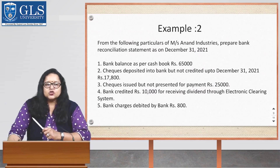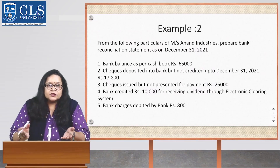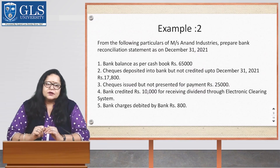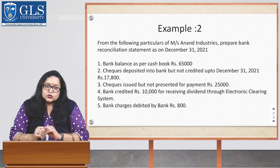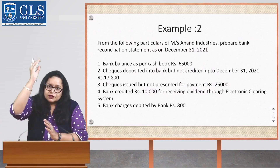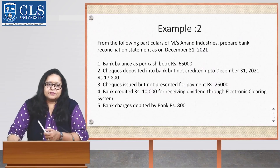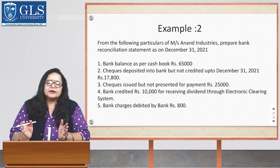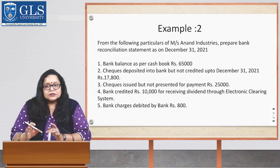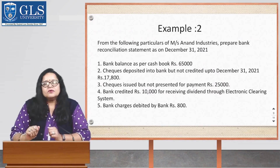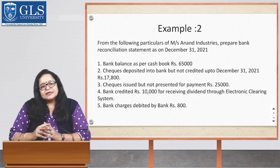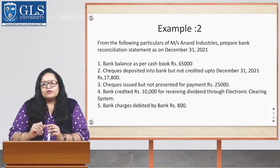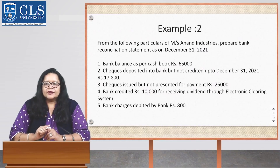Bank credited Rs. 10,000 for receiving dividend through the Electronic Clearing System — with this amount our balance increases, so we add it. Bank charges debited by bank: Rs. 800 — the bank directly charged these, so our balance decreases and we deduct it.